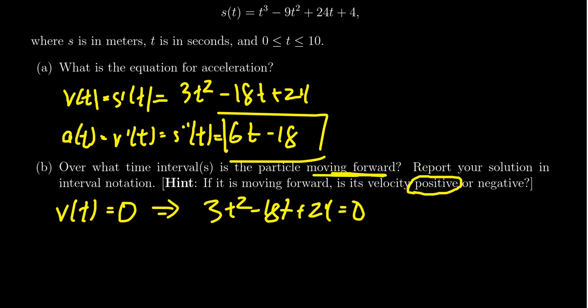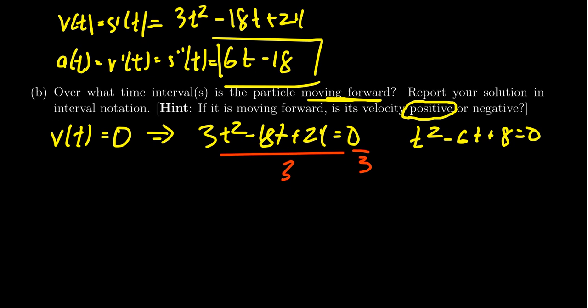Noticing that everything is divisible by 3 on the left-hand side, I'm just going to divide everything by 3. Smaller coefficients are always better. We get T squared minus 6T plus 8 is equal to zero. This is now a quadratic equation. We could solve it in many various ways. We could try factoring it or use the quadratic formula.